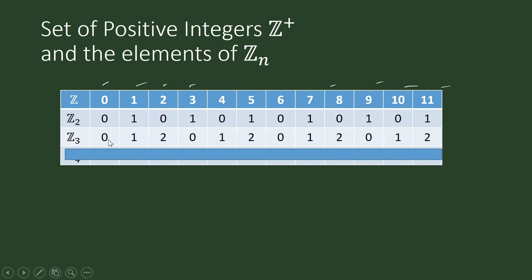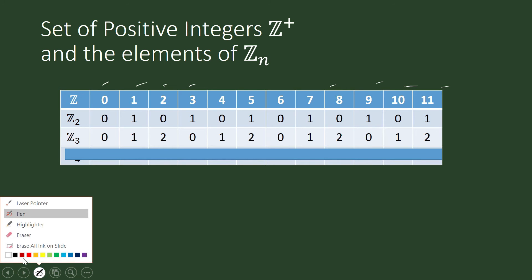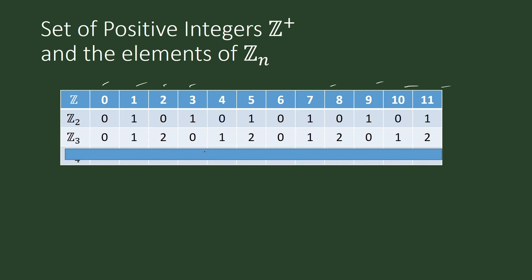0 is congruent to 0, 1 is congruent to 1, 2 is congruent to 2. But when we go to 3, we count 3 as 0 in modulo 3 arithmetic because when we divide 3 by 3, the remainder is 0. 4 is 1, 5 is 2 because when we divide 5 by 3, the remainder is 2, and so on.